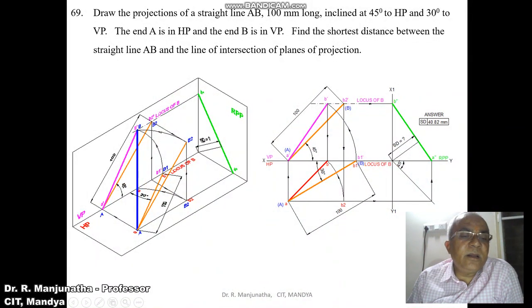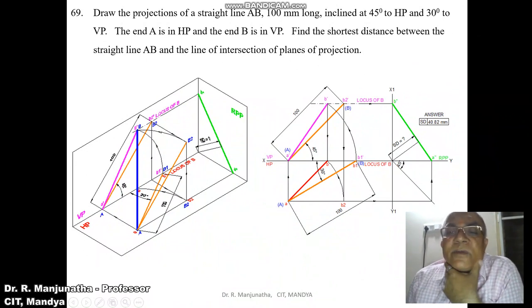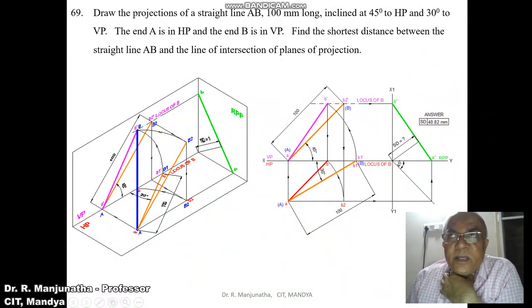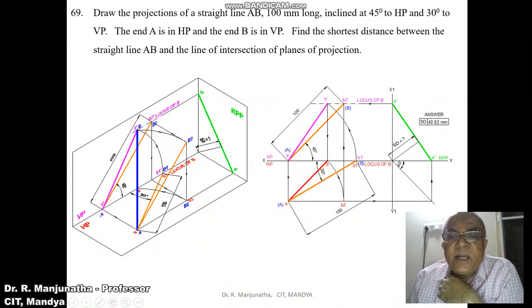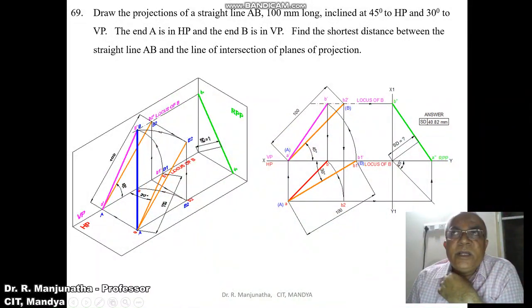Draw an arc such that it goes onto the XY line to get point B. You are rotating line AB2 in space so that B lands on the XY line. Capital A and capital B form the line in space — B is on VP and A is on HP. In the orthographic view, from B2-dash draw a vertical projector to cut the locus of A in the top view. With A as center and radius AB2, rotate to touch the XY line and mark this as B, then join A to B as the top view line.